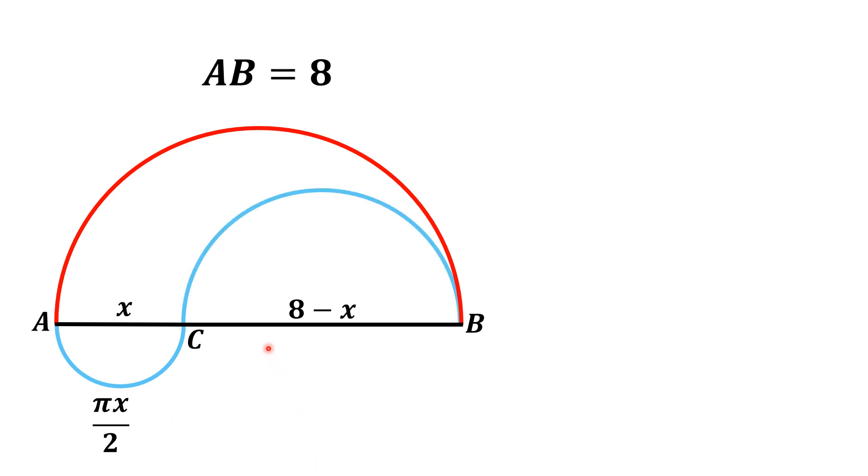Now, we focus on this blue curve. It is again a semicircle having diameter equal to 8 minus x. Using the same formula, we get the length of this blue curve as π(8-x) divided by 2.